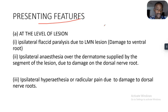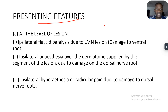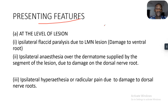At the level of the lesion, we have ipsilateral flaccid paralysis due to a lower motor neuron lesion — specifically damage to the ventral roots. We also have ipsilateral anesthesia over the dermatomes supplied by the lesion segments, due to damage to the dorsal nerve root. Additionally, there is ipsilateral hyperesthesia or radicular pain, also due to damage to the dorsal nerve roots.